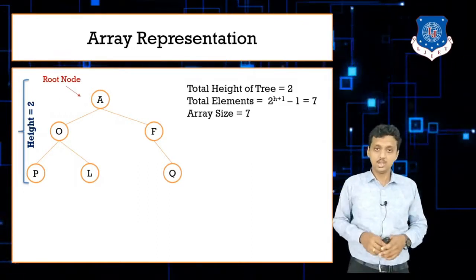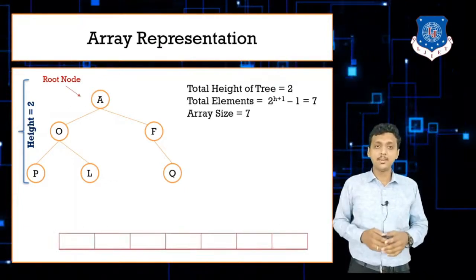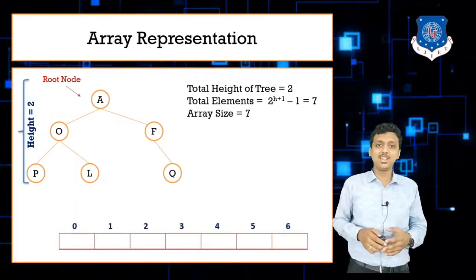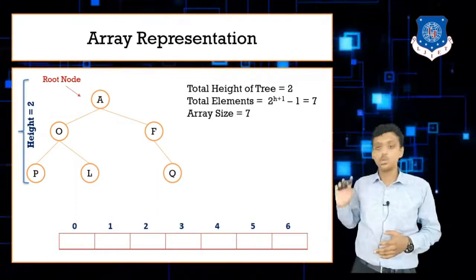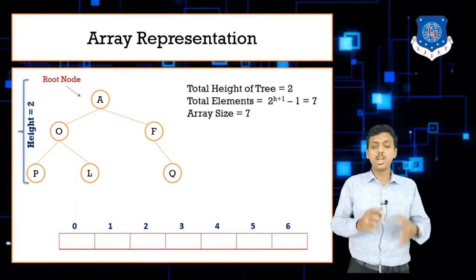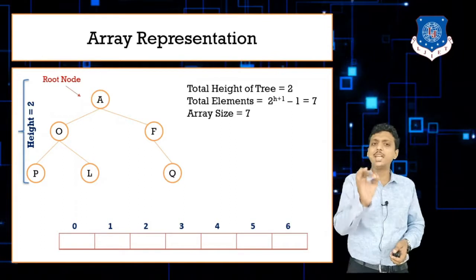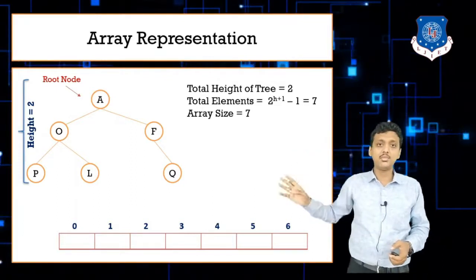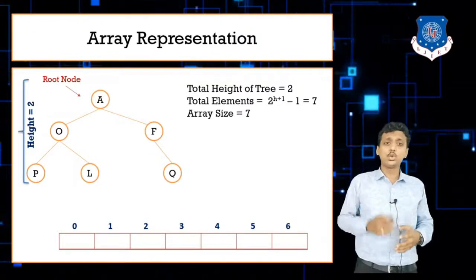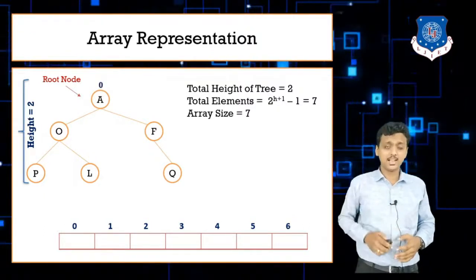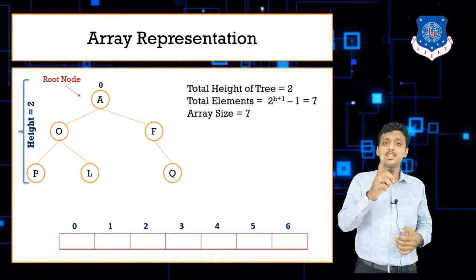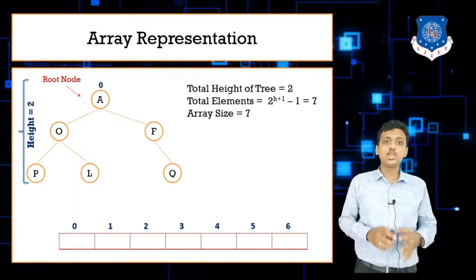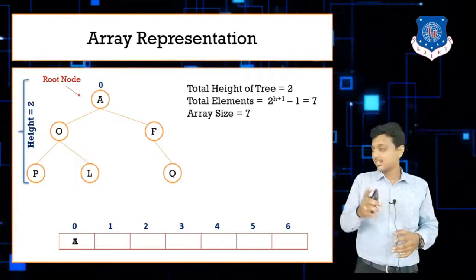I'm creating an array with indexes from 0 to 6. Remember, in programming, arrays start at index 0. To place elements: first go to the root node, then take left, then take right. The root node A is placed at index 0.